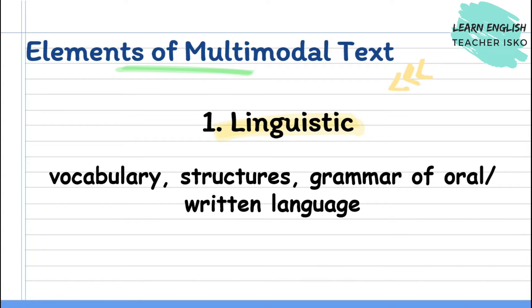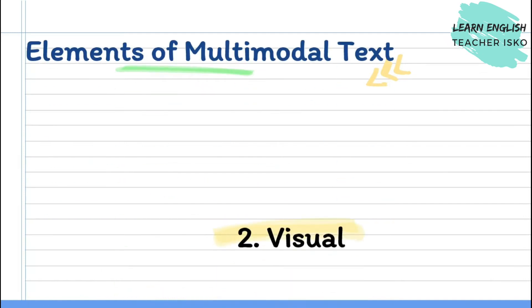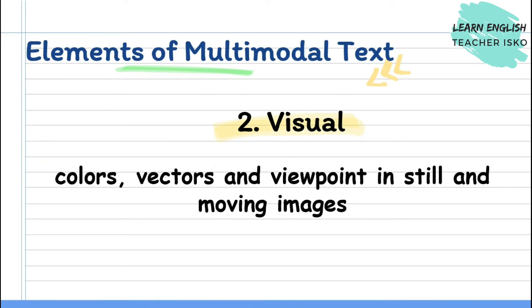The second element is visual. This includes colors, vectors, and viewpoints of still and moving images.